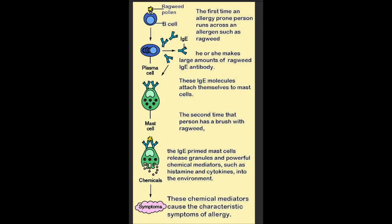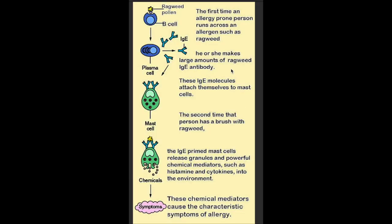Here's a picture that kind of goes through that. The first time an allergy-prone person runs across an allergen such as ragweed, they may not make any antibodies, but once they do, those antibodies sit on the cell surface of the mast cells. The second time the person gets ragweed in their system, the granules and chemicals inside the mast cells spill out — and that's when the symptoms start.